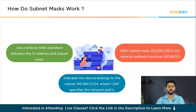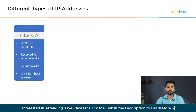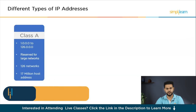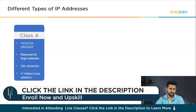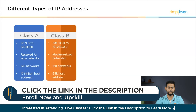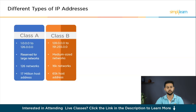Now let's understand different types of IP addresses. First, we have Class A, which ranges from 1.0.0.0 to 126.0.0.0. This class is reserved for large networks and allows for up to 126 networks, with each network having almost 17 million unique host addresses. Then we have Class B, with a range of 128.0.0.0 to 191.255.0.0. It is suitable for medium-sized networks and permits around 16,000 networks, with each network supporting nearly 65,000 unique host addresses.